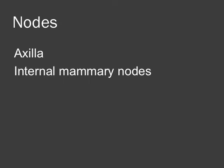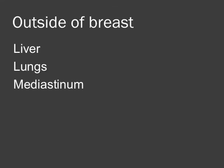We want to check the lymph nodes — both in the axilla and in the internal mammary area. Although axillary lymph nodes can be quite large, we're going to be looking more at the morphological characteristics. We usually do not see internal mammary nodes larger than about five millimeters, so any internal mammary nodes should raise concern. Make sure you look outside of the breast before you finish: look at the liver, the lungs, check the mediastinum. We pick up a lot of incidental findings — sometimes just liver cysts, but also hemangiomas, metastases, and other lesions.